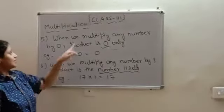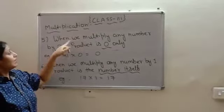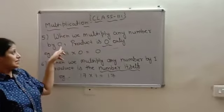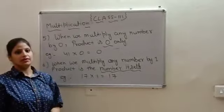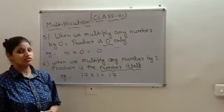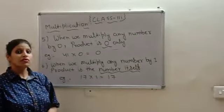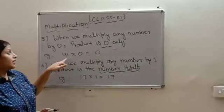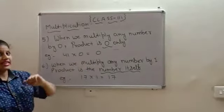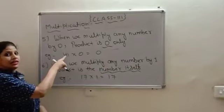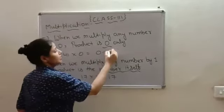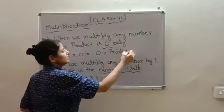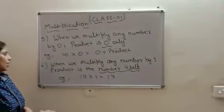Now, let's take the next rule. When we multiply any number by 0, product is 0 only. Children, you take any of the number, whether it's a bigger number or a smaller number. But, if you multiply it by 0, product will be 0. For example, I have taken 41. 41 multiplied by 0 will be 0. So, 0 will be your product. This is your answer of multiplication.